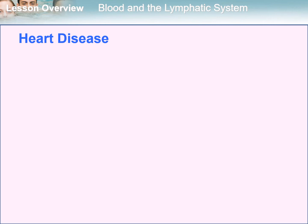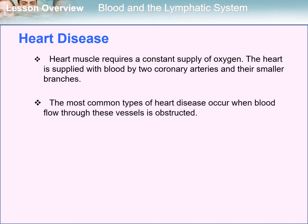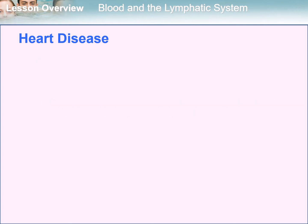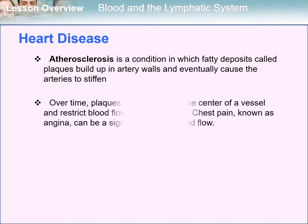Let's start the discussion on heart disease. Heart muscle requires a constant supply of oxygen. The heart is supplied with blood by two coronary arteries and their smaller branches. The most common types of heart disease occur when blood flow to these vessels is obstructed. This obstruction is called atherosclerosis, a condition in which fatty deposits called plaques build up in artery walls and eventually cause the arteries to stiffen. Over time, plaques often bulge and occlude the center of a vessel, restricting blood flow to heart muscle. Chest pain, known as angina, can be a sign of restricted blood flow.